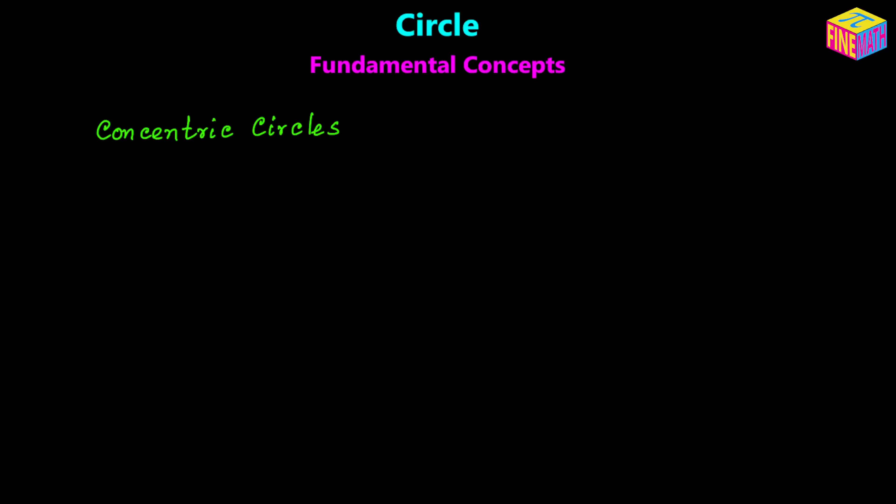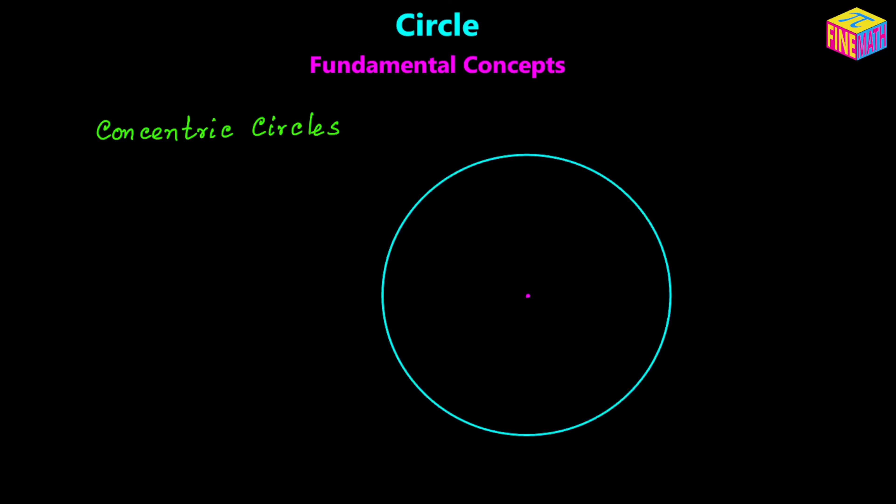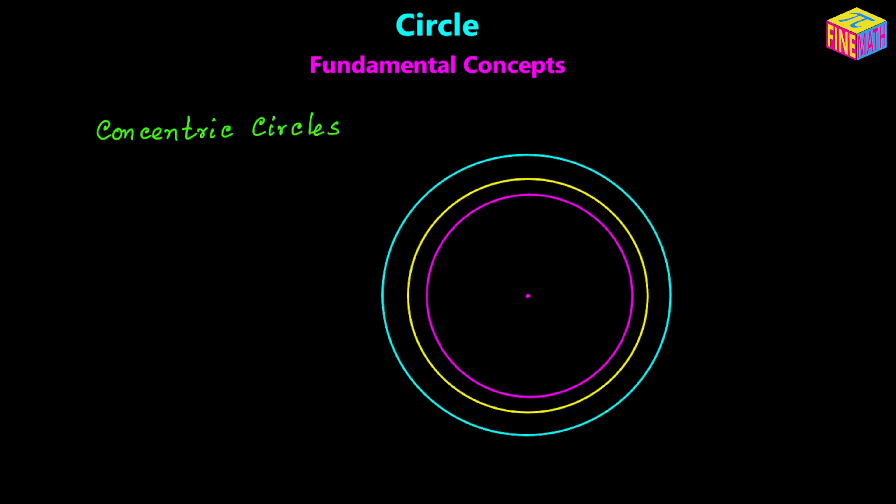Next we are going to discuss concentric circles. From the name itself — concentric — these are a bunch of circles having the same center, but of course different radii; otherwise they would all be the same circle. Here I have three circles drawn on top of each other sharing the same center but with different radii — those circles are called concentric circles.